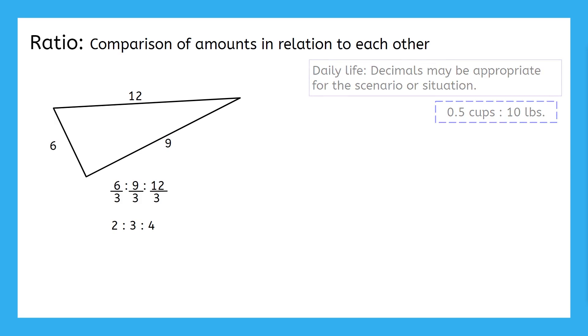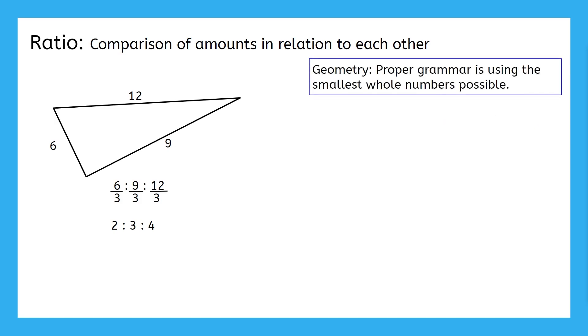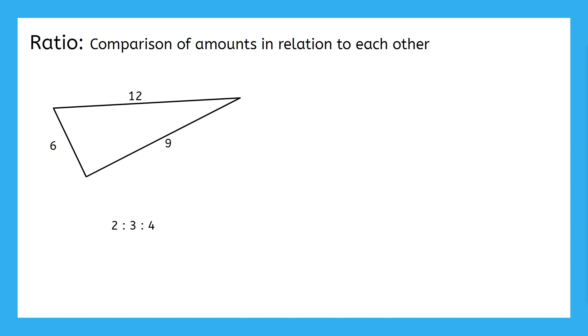But, when you're working with ratios in geometry, it's considered proper grammar to use the smallest whole numbers possible. Also, the simplified ratio is always the best answer to provide for someone else. Using smaller numbers makes ratios easier to work with, so let's get rid of the unsimplified ratio that we started with here.